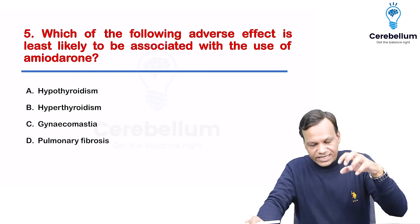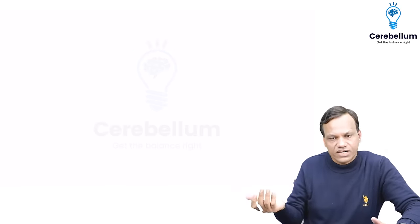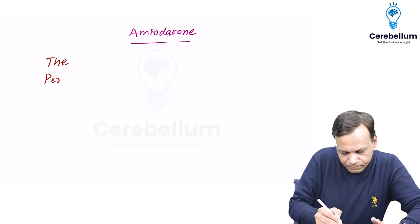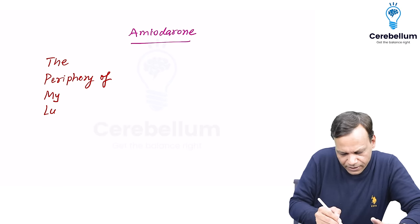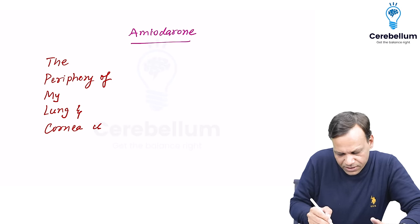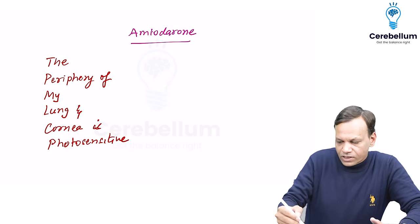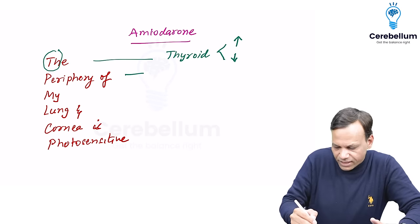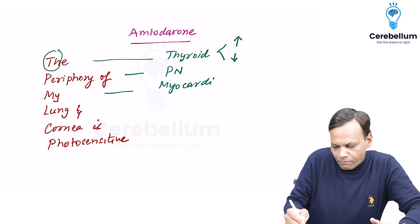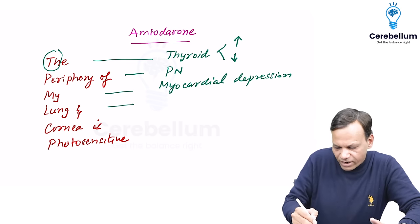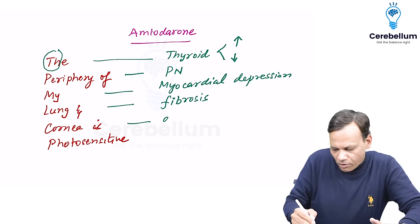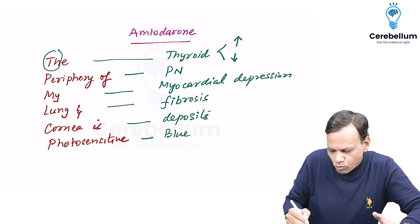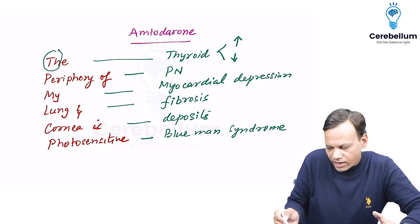Which adverse effect is least likely associated with Amiodarone? The adverse effects of amiodarone can be remembered as: T for thyroid (hyper or hypothyroidism), peripheral neuropathy, myocardial depression, lung fibrosis (pulmonary fibrosis), corneal deposits, and photosensitivity causing a blue-colored rash on the face known as blue man syndrome.